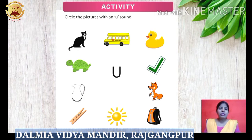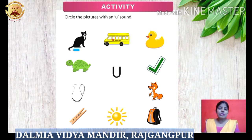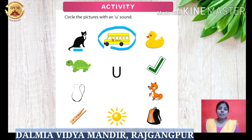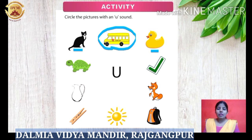Here we have a small activity on U sound. First we will recognize each picture and name it. If there is a U sound in its name, then we will circle the picture. The first picture is a cat – does it have U sound? No, so we will not circle cat. Next is bus – B U S – it has U, so we will circle the picture of bus. Now the next picture is of a duck – does it have U sound? Yes. D U C K – duck. So we will circle the picture of duck.